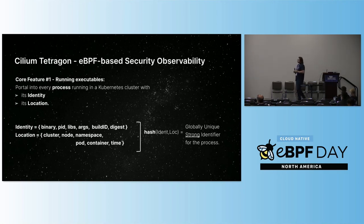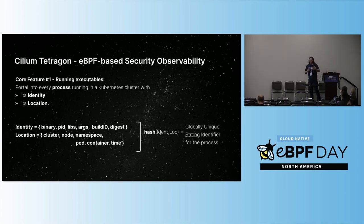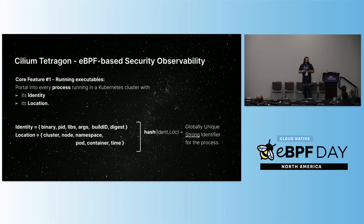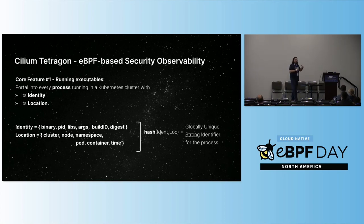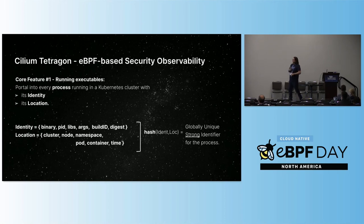Here are some key points for why we like Tetragon. The first one sounds basic but is actually quite tricky: to always know what is running on your system. You need identity and location. Identity is not just a binary name because you can rename files, not just a PID because PIDs change. It includes all the libraries loaded — did this binary load a vulnerable version of OpenSSL, does it have my patch? It includes the args the binary was run with, the build ID, and we do a SHA-256 digest to give you exactly what code is running.